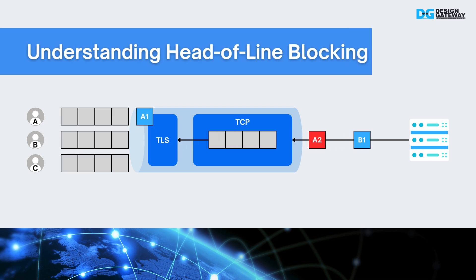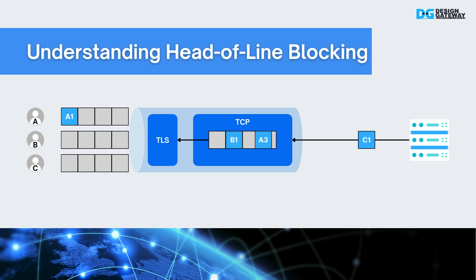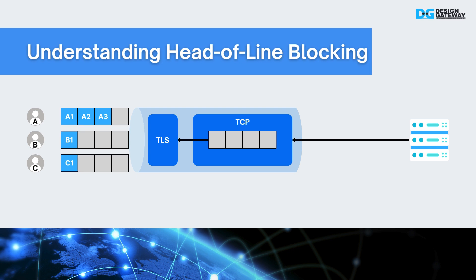In an unreliable network using TCP, packet loss leads to head-of-line blocking. Imagine the sender transmits four packets, but packet A2 is lost. When the receiver gets packets B1, A3, and C1, they are blocked and cannot be sent to the upper layer for processing, because packet A2 is missing. TCP needs to receive packet A2 to construct continuous received data before sending it to the upper layer. In this scenario, TLS can only process encryption-decryption for packet A1. The TCP engine must completely receive packet A2 before sending packets B1, A3, and C1 to TLS for continuous processing.